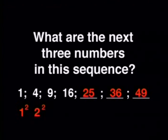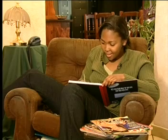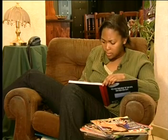Excellent! How did you work it out? Here we have 1 squared, 2 squared, 3 squared, 4 squared. So it seems logical that the next numbers could be 5 squared which is 25, 6 squared which is 36, and 7 squared which is 49. Look at the thinking that went into this — we looked for a pattern in the numbers, something that linked them together, and used that pattern to find the next terms.